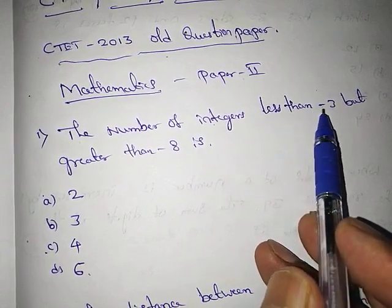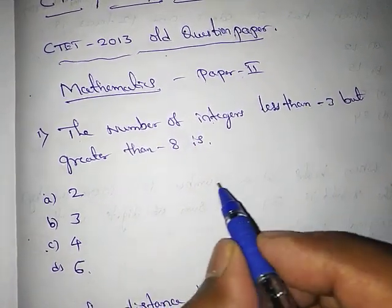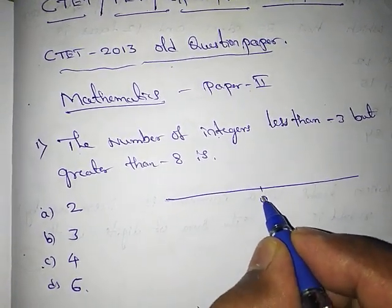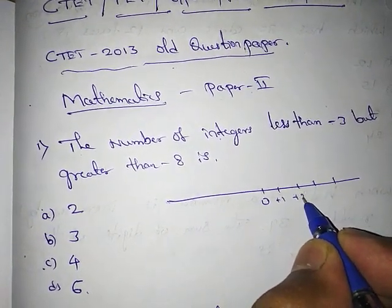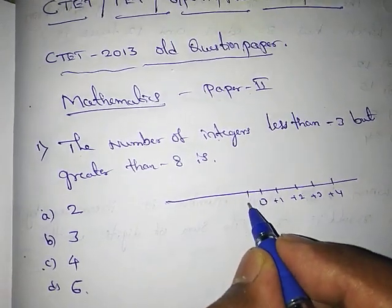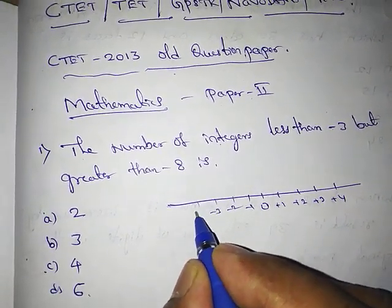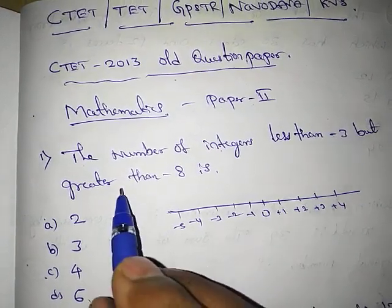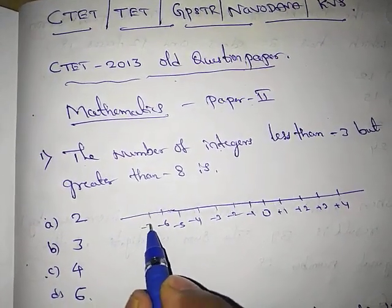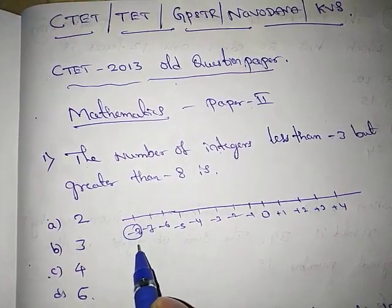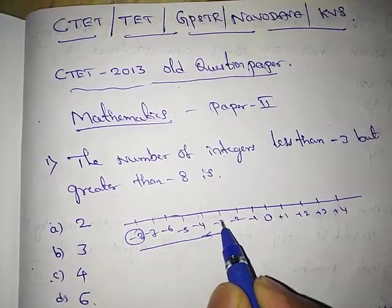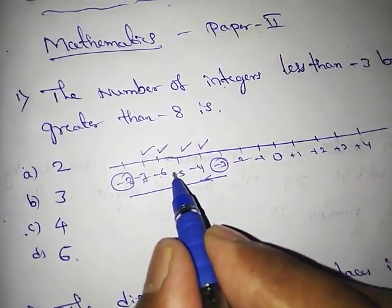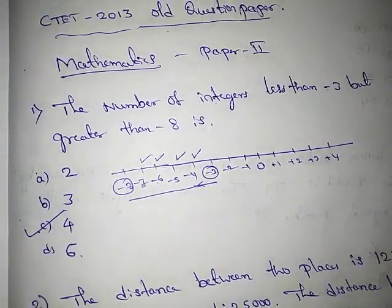Numbers less than -3 — draw a number line: 0, 1, 2, 3, 4... and -1, -2, -3, -4, -5 and so on. Less than -3 and greater than -8: the numbers are -7, -6, -5, -4. That gives 4 numbers, so the answer is option C: 4.